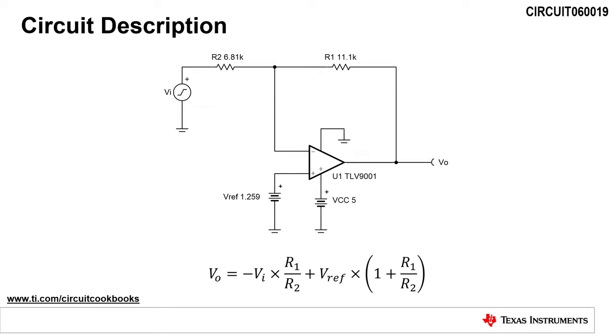The circuit can be used to translate a sensor output voltage that has a positive slope and negative offset to a usable ADC input voltage range. This video explains how to design this circuit using TI's TLV9001 in a few easy steps.